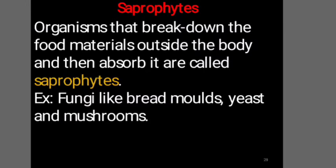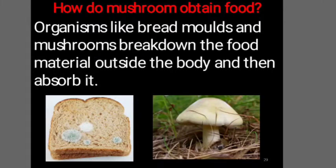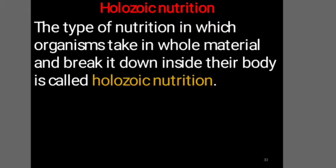Another mode of nutrition is called heterotrophic nutrition, where organisms break down the food materials outside the body and then absorb it. These organisms are called heterotrophs. For example, fungi like bread molds, yeast, and mushrooms. How do heterotrophic organisms like mushrooms obtain their food? Organisms like bread molds and mushrooms break down the food materials outside the body and then absorb it.